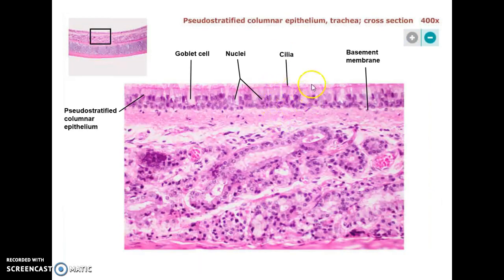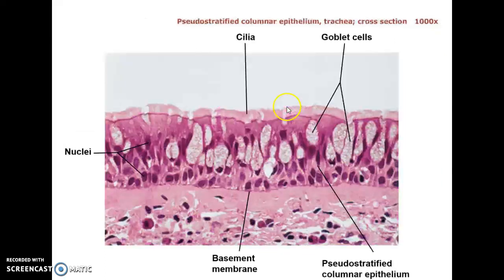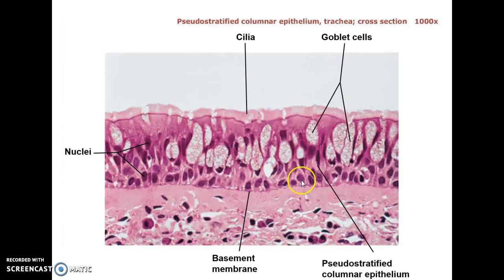Seeing it more up close, you can see the nice columnar cells with cilia on their surface, and the little basal or stem cells that divide and replace the cells — that gives it that pseudostratified look. Even closer up, look at those nice columnar cells with their nuclei on the surface, the cilia there, and the little basal cells down here that would replace these cells when they wear away because they're constantly exposed to the air.